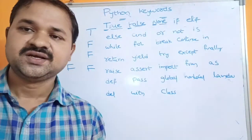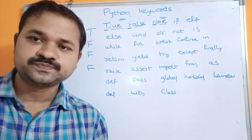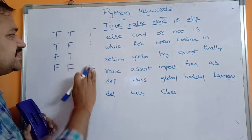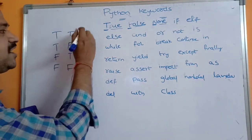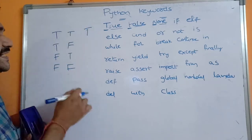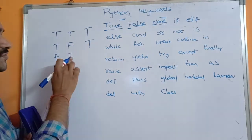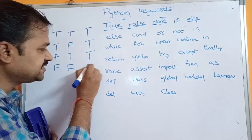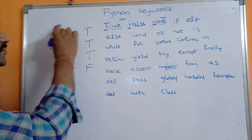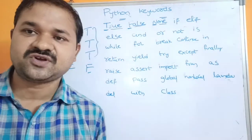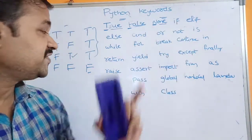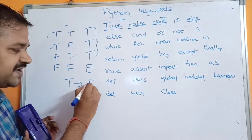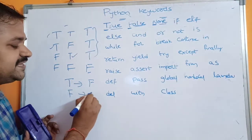For the or keyword: if any one of the operands is true, the result is true; only if both operands are false is the result false. For the not keyword: if the expression is True, not returns False; if the expression is False, not returns True.